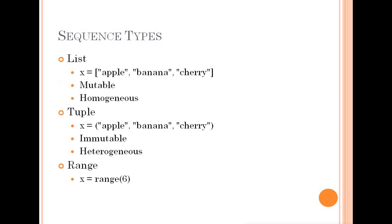Next is Sequence Types. There are three sequence types in Python: List, Tuple, and Range. Sequence types allow you to store multiple values in an organized and efficient manner.